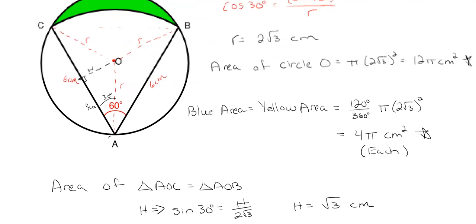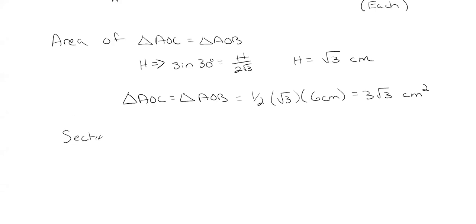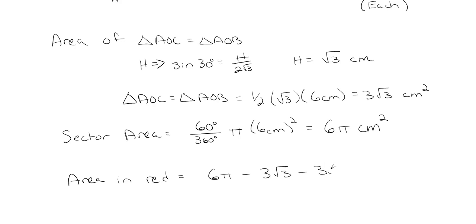What about the area of the sector? We have our angle of 60 degrees, and our radius is just the side of the equilateral triangle, six centimeters. So the area of the sector with center A is 60 over 360 multiplied by pi times six squared, which gives six pi centimeters squared. The area in red would be six pi minus two times three square root of three, which gives us six pi minus six square roots of three centimeters squared.